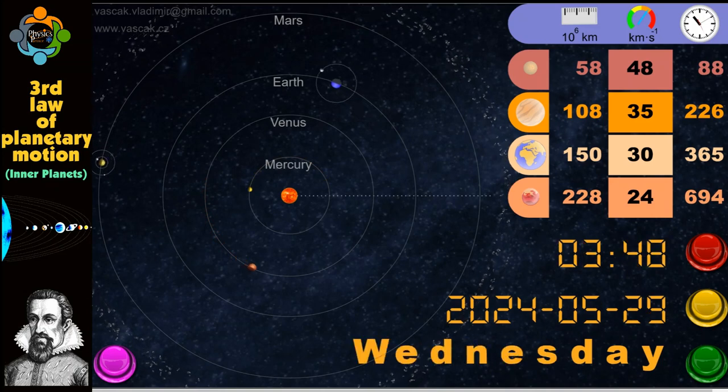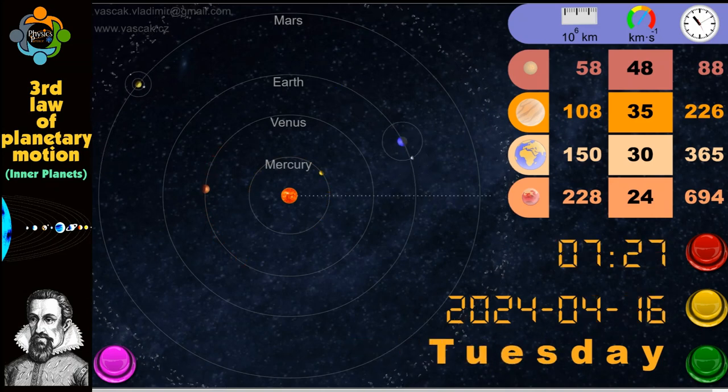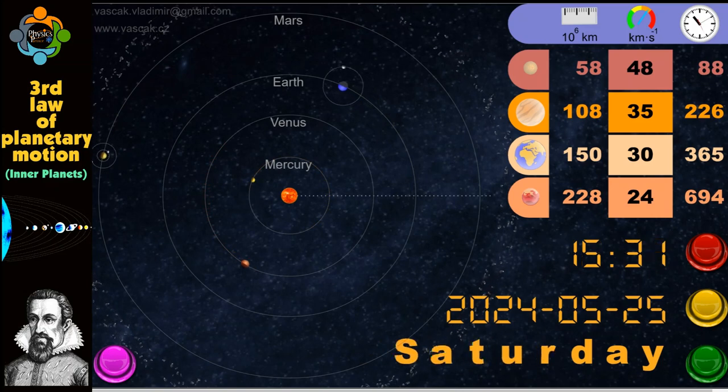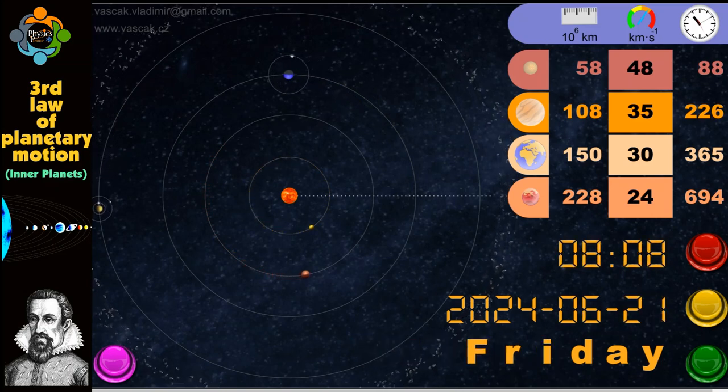Johannes Kepler in the 17th century and describes the relationship between a planet's orbital period and its distance from the Sun.